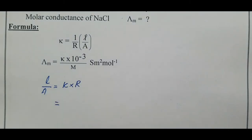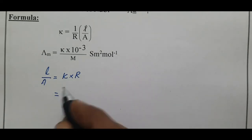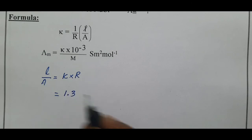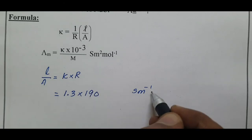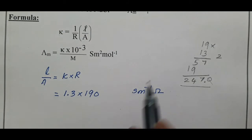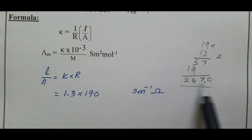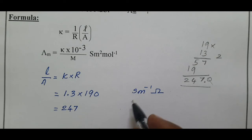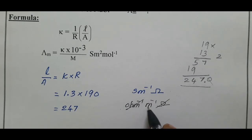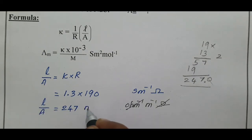The cell constant L/A = κ × R = 1.3 S m⁻¹ × 190 ohm = 247. Multiplying 1.3 by 190 gives 247. The unit: Siemens is ohm⁻¹, so S m⁻¹ × ohm = ohm⁻¹ m⁻¹ × ohm, and the ohm and ohm⁻¹ cancel, leaving the unit of the cell constant as m⁻¹. Therefore, L/A = 247 m⁻¹.